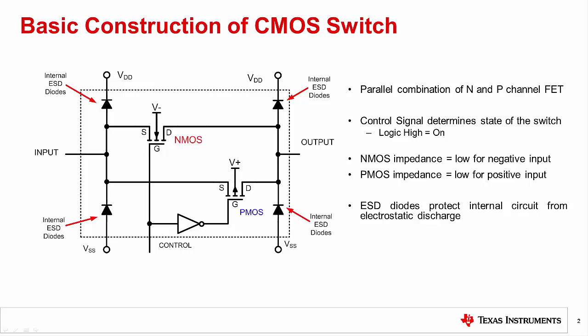Several CMOS switches can be combined with simple logic control to create a multiplexer. Although the CMOS switch input pin and output pin are interchangeable, for simplicity we will assume the source pin as the input and the drain pin as the output. Electrostatic discharge, or ESD, is a sudden flow of current that occurs when two bodies with a charge imbalance are brought near each other.